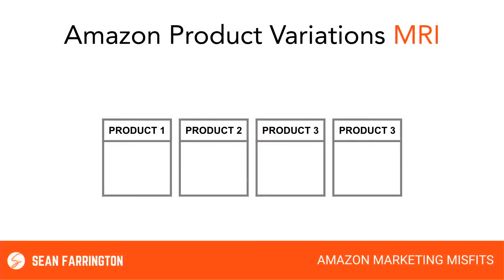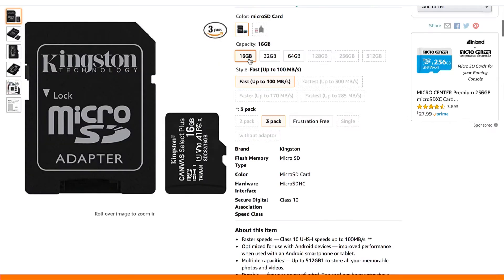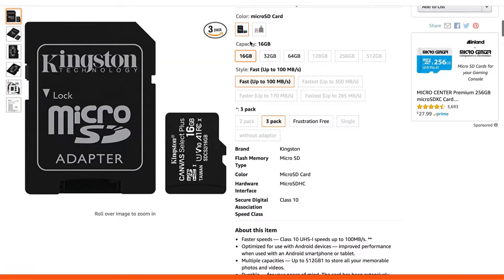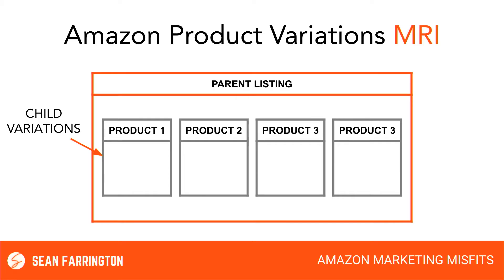In reality, they're actually separate products — there's a 32 gigabyte version, a 16 gigabyte version. These are all separate products, but Amazon lets you group them together in a way that's easier for the customer. The way this is done is by creating product variations. There are really two parts: the child variations, which are the individual products — the 16 gigabyte, the 32 gigabyte — they're all individual products.